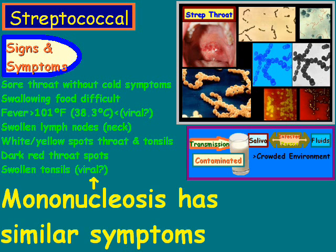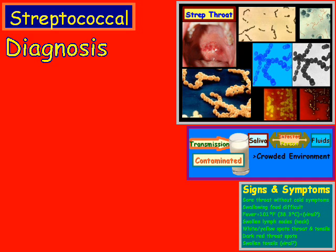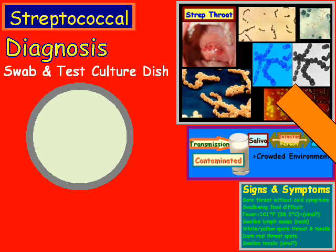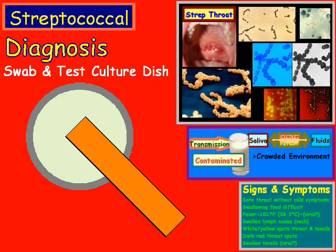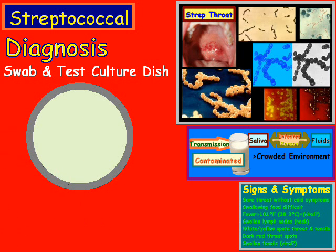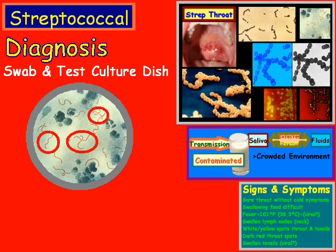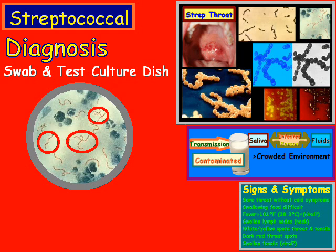One thing to point out is that mononucleosis, commonly known as mono and typically common in teenagers, has similar symptoms to strep throat. For diagnosis, one way is to take a swab from the back of the throat, place it in a culture dish, and test it. If it shows strep strains like in the picture, then it's definitely strep throat. Another way is to simply look for the signs and symptoms covered earlier, though those can be a little tricky.